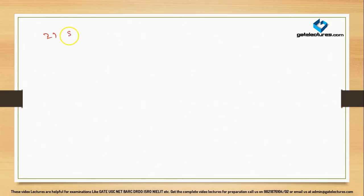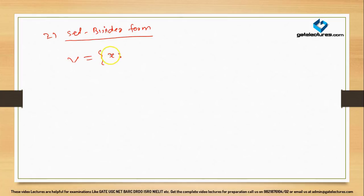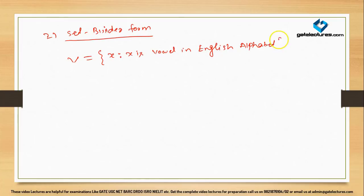Now the second method: what is set builder form? In set builder form, all the elements of a set possess a single common property which is not possessed by any element outside the set. For example, if you want to define the set of all vowels, you write {x | x is a vowel in the English alphabet}. This form is known as set builder form.